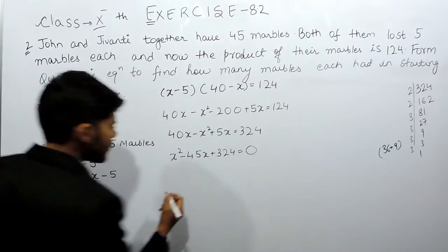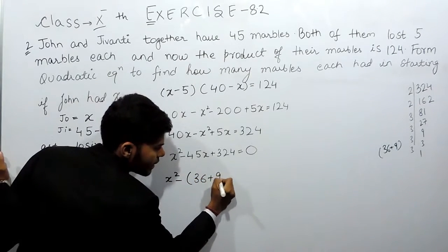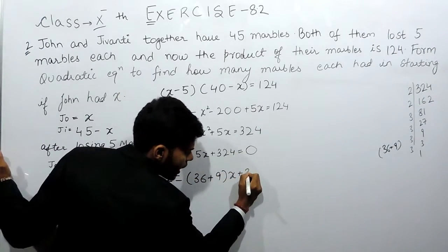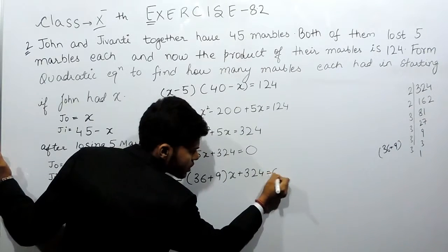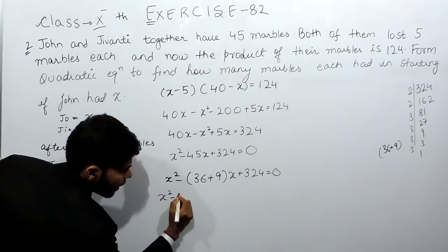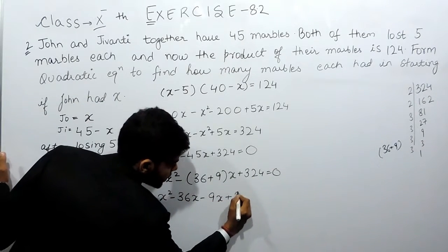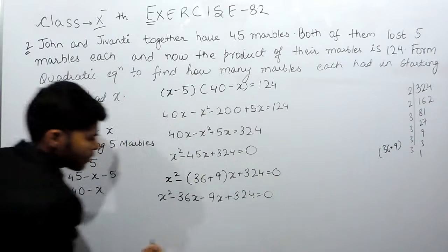This is equals to x square minus 36x plus 9x plus 9x plus 324 is equals to 0. x square minus 36x minus 9x plus 324 equals to 0.